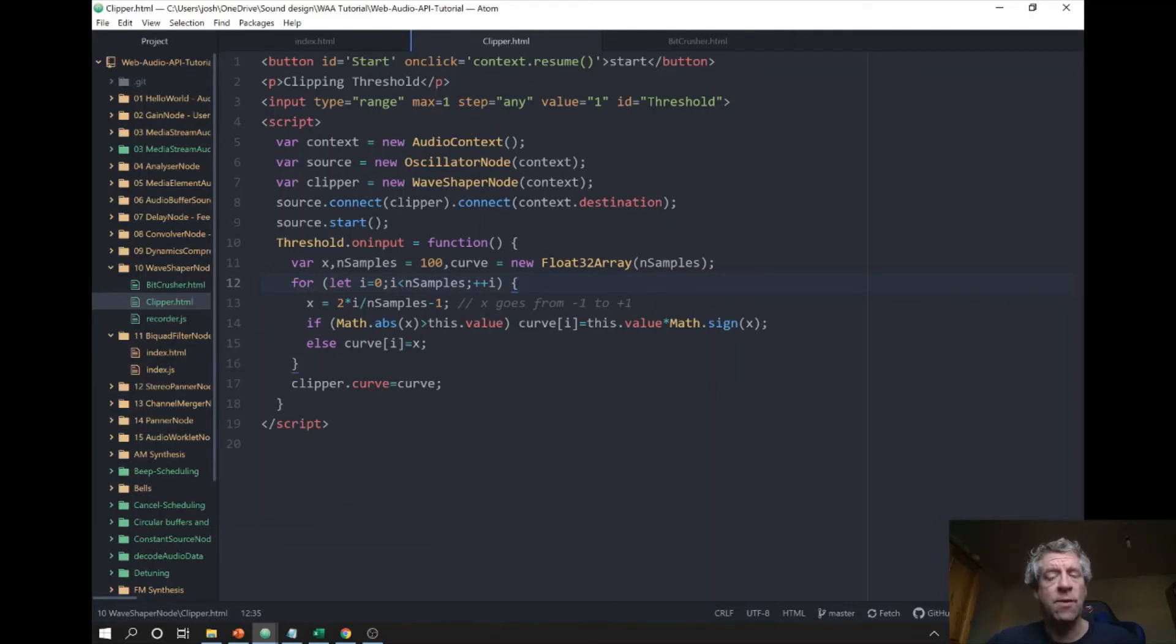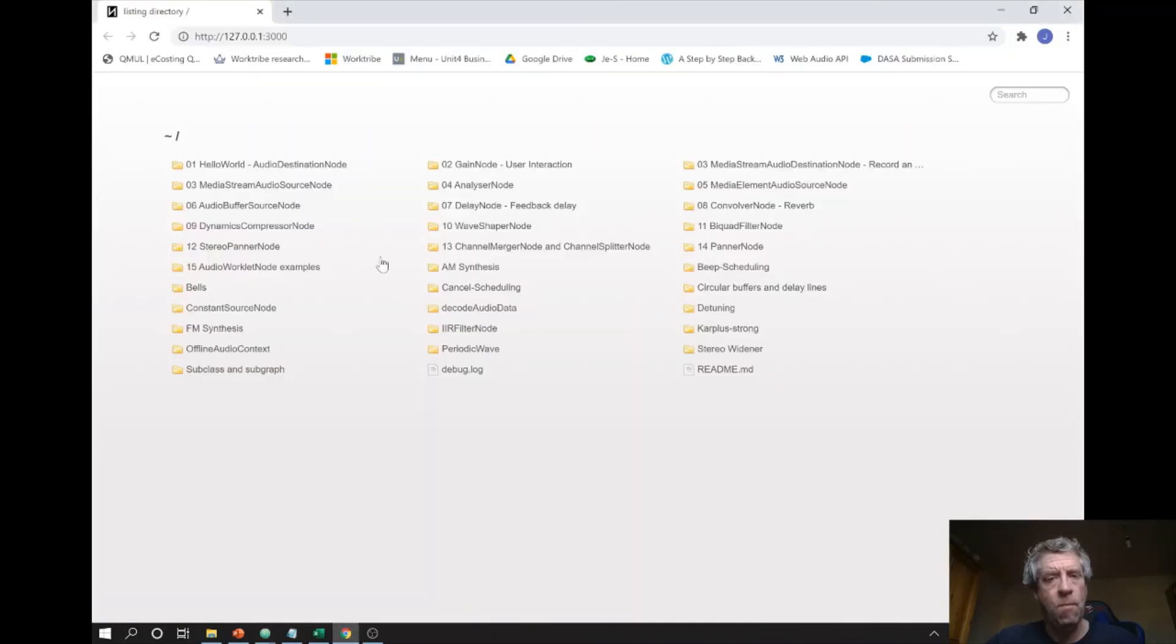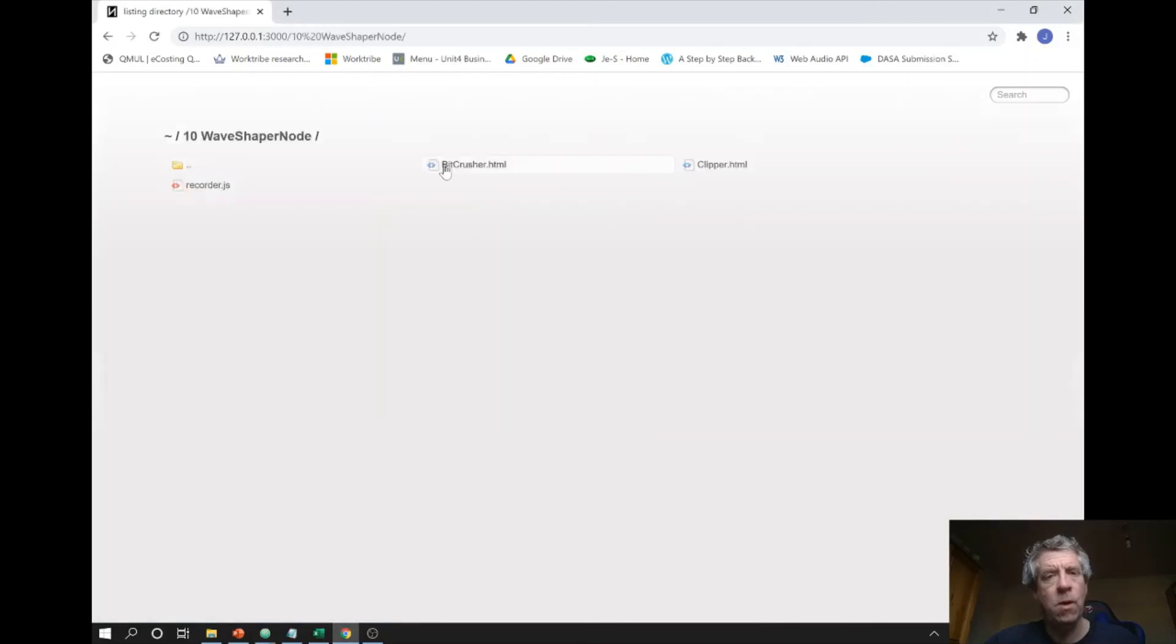So if we haven't touched the threshold at all, then it should start with no clipping whatsoever. And then we put exactly the function that we saw on the slide to define the input-output characteristic curve. And how is this going to sound?